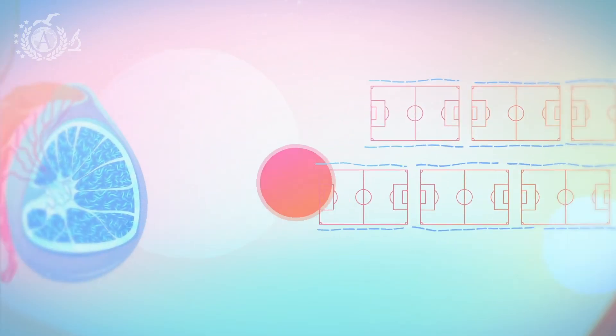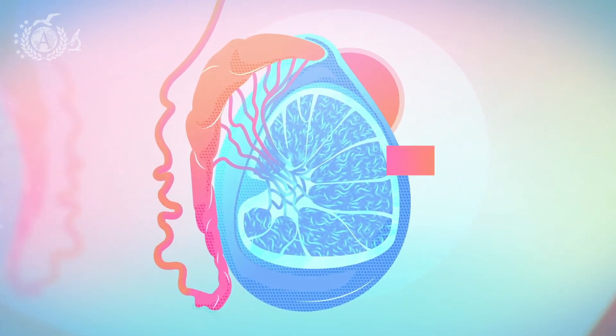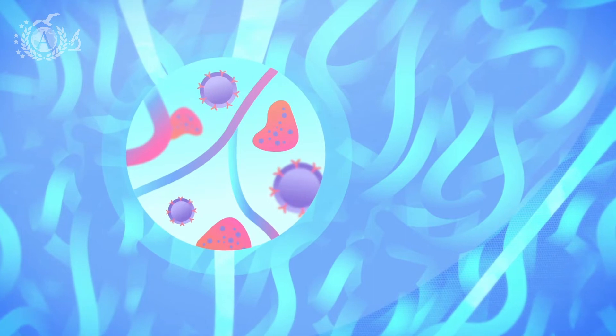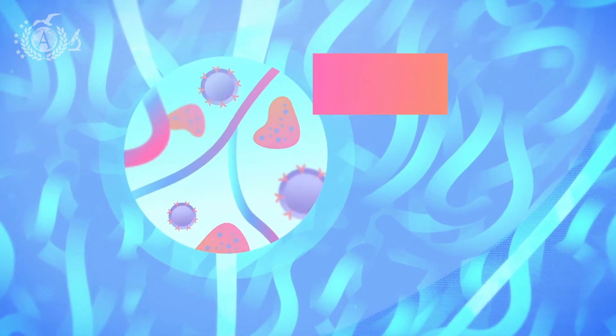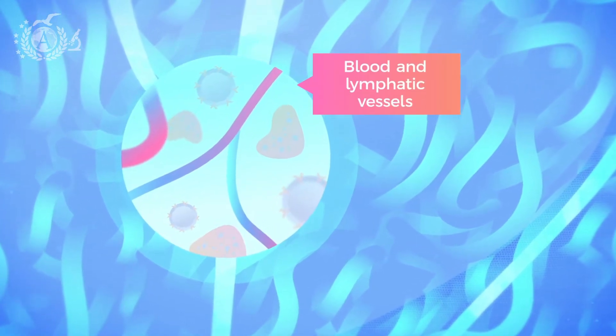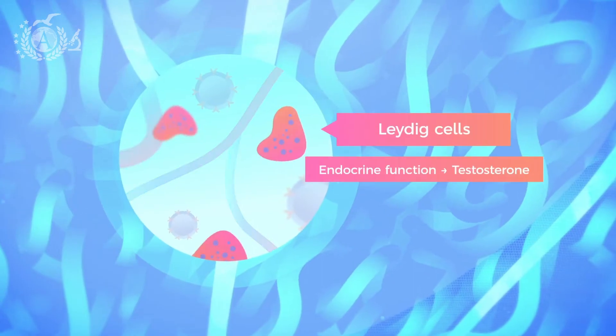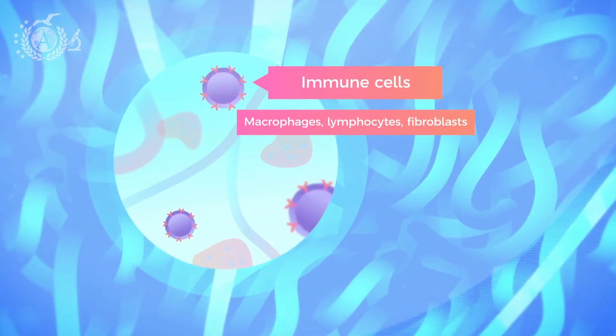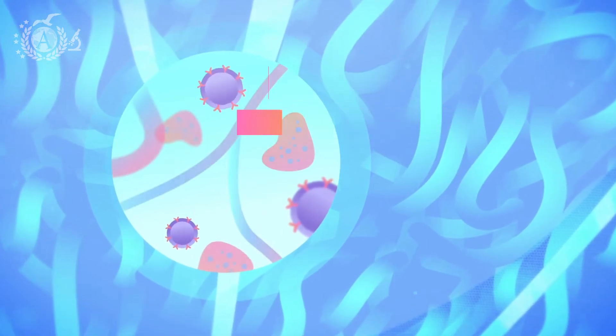Besides a capsule and parenchyma, like any full organ, we can also see a stroma that is between the various seminiferous tubules. This is a simple loose connective interstice, mainly occupied by blood and lymphatic vessels, Leydig cells with endocrine function, and immune cells such as macrophages, lymphocytes, and fibroblasts.